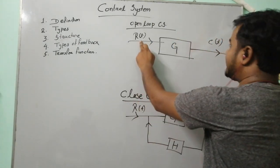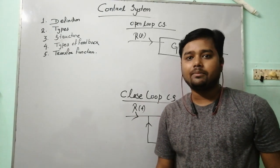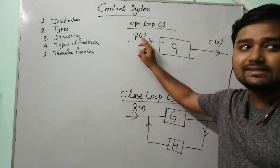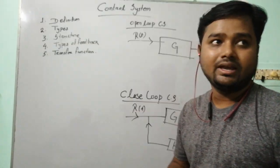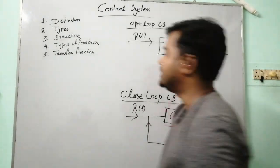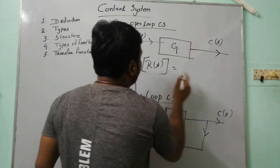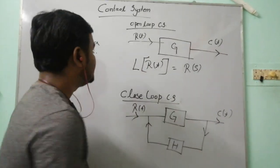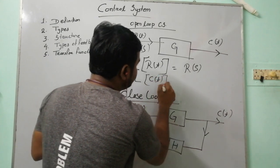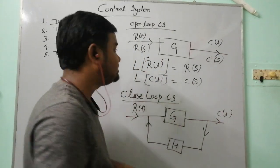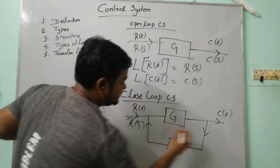Now, r(t) and c(t) are in the time domain, but in control system we need to work in the frequency domain. We convert the time domain using the Laplace transformation. The Laplace transformation of r(t) gives R(s), and the Laplace transformation of c(t) gives C(s), which is the frequency domain representation and the most important factor of the control system. In both open and closed loop, we use R(s) and C(s).